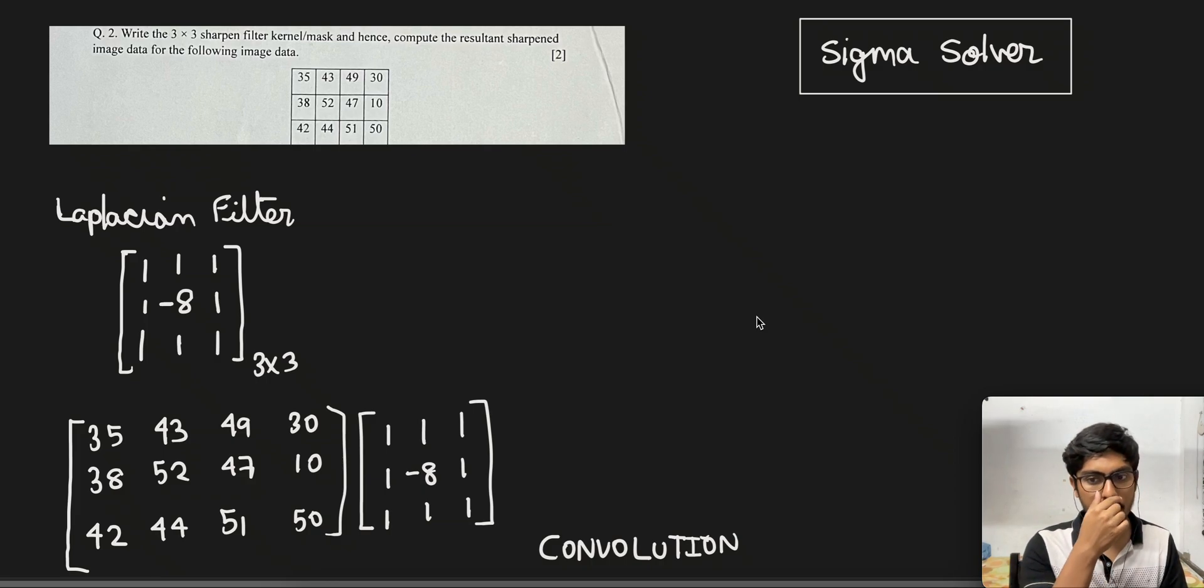Hello everyone, so today we are going to solve another problem on convolution. We are given a 3x3 sharpen filter kernel or mask and we need to compute the resultant sharpened image data for the following image data.